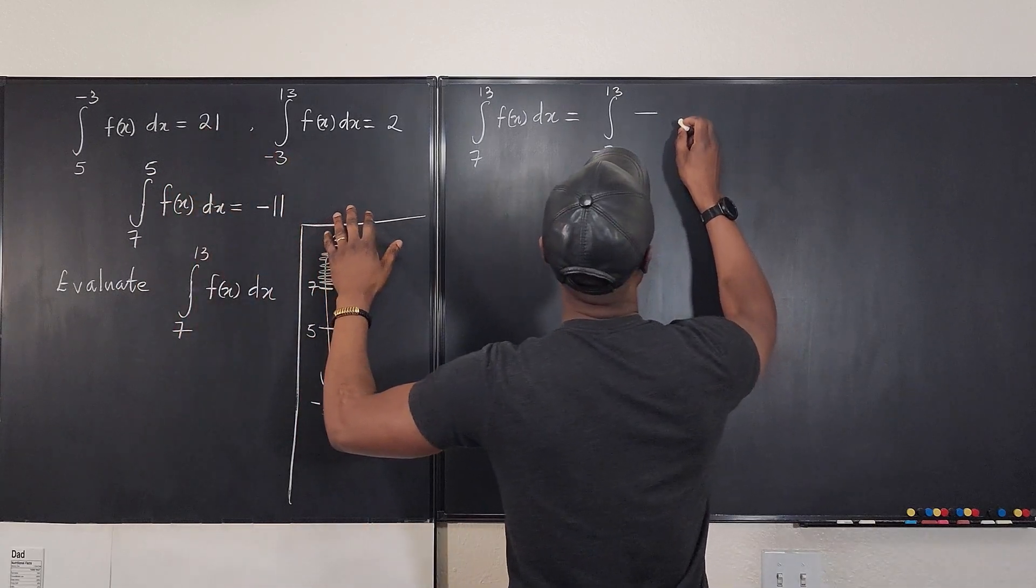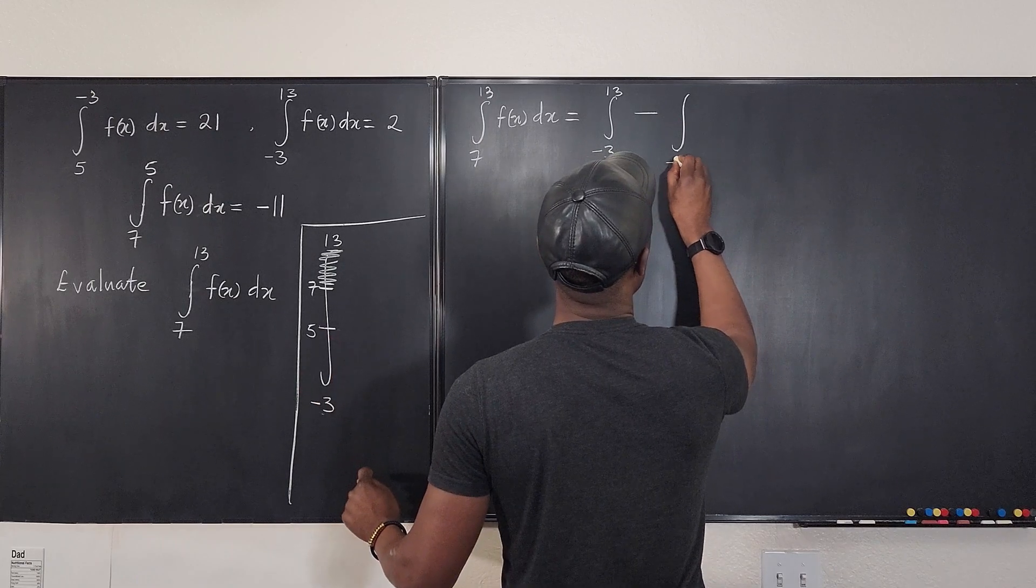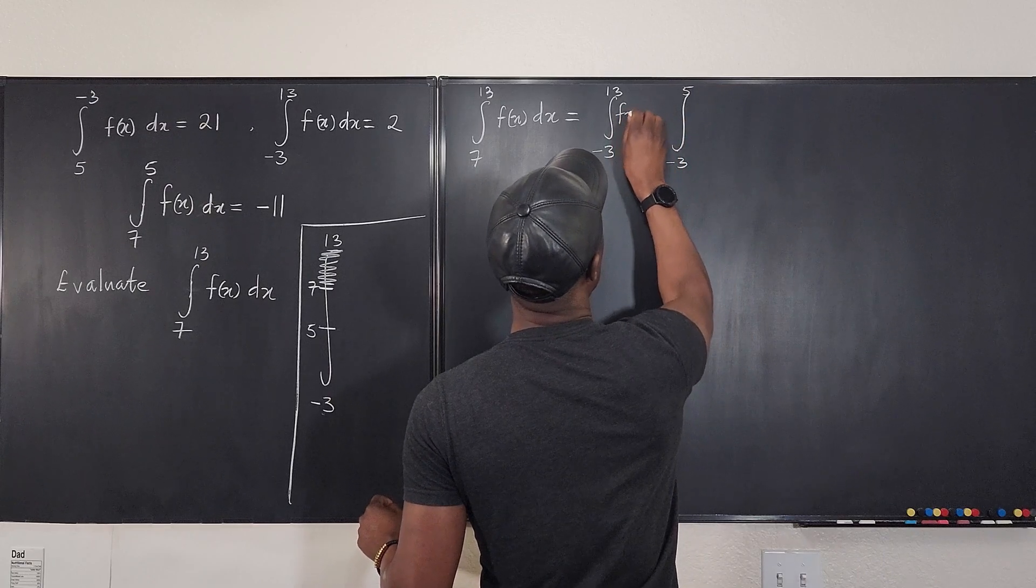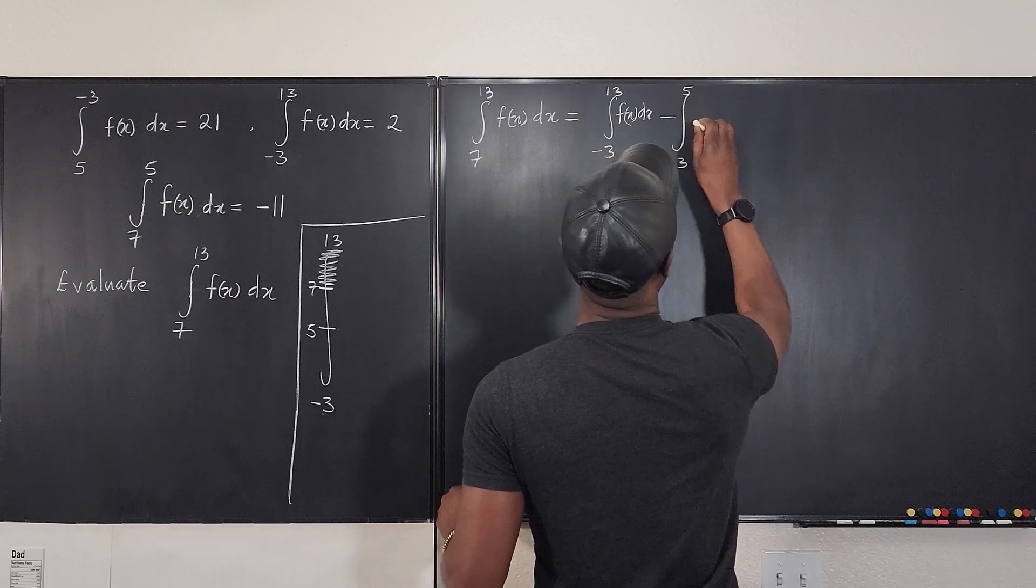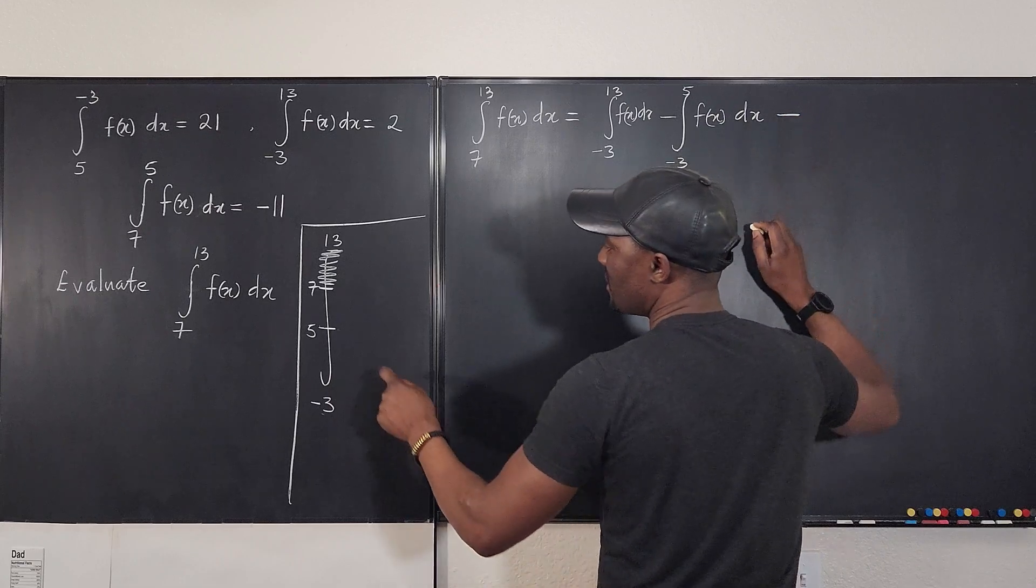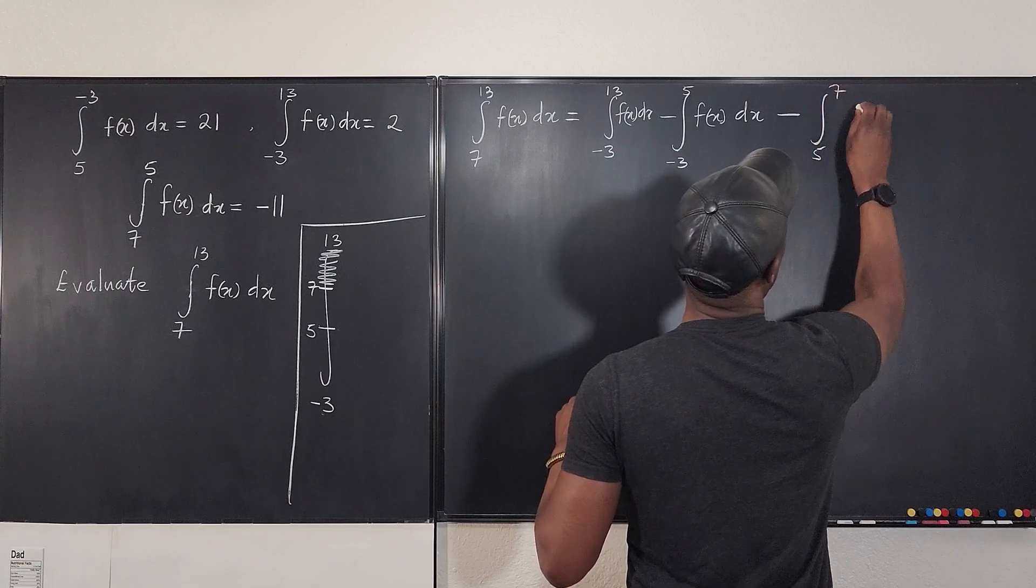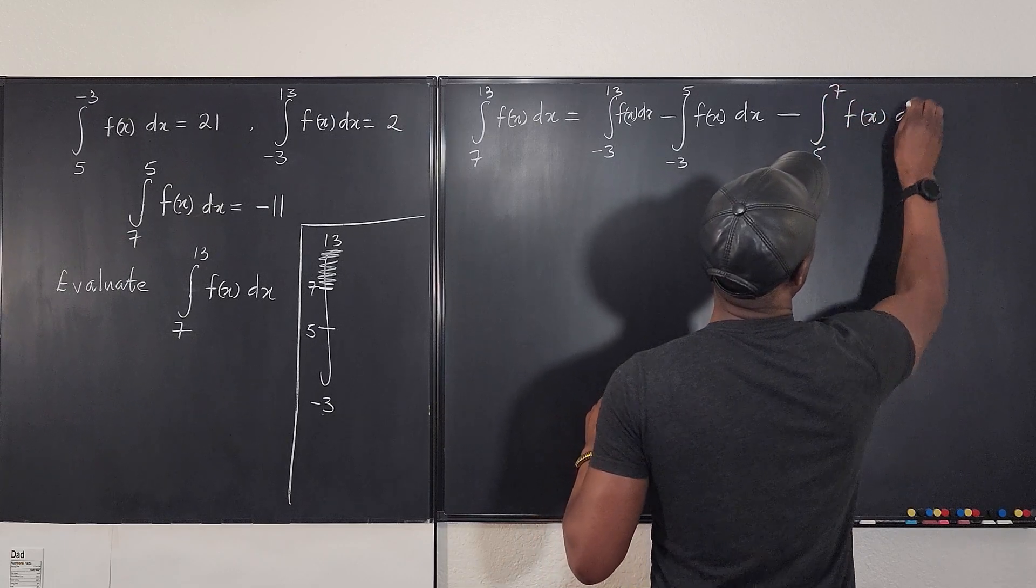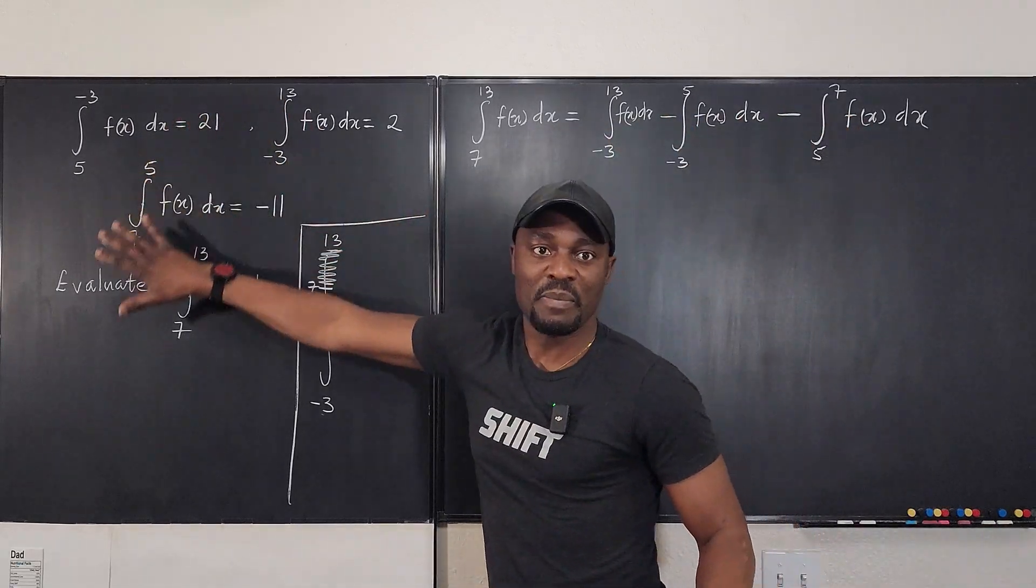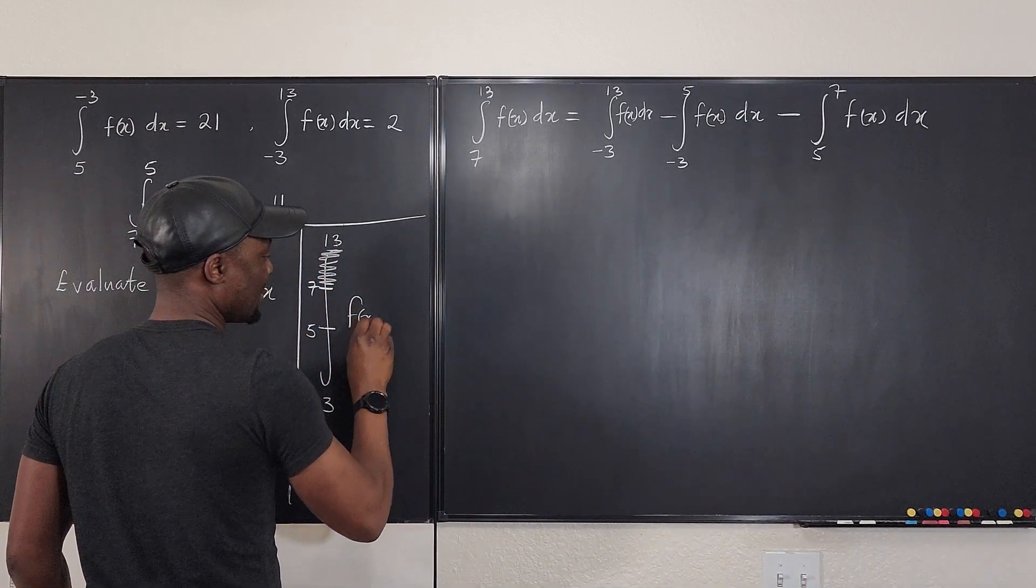So it would be minus the integral from... We're going to write what we have here. That's negative 3 to 5 of... Oh, from 5 to 7 of f(x) dx. So what we have written is not dependent on this. It's dependent on this giant one that we have. This is f(x) dx. So now I need to find all the things that I've got.